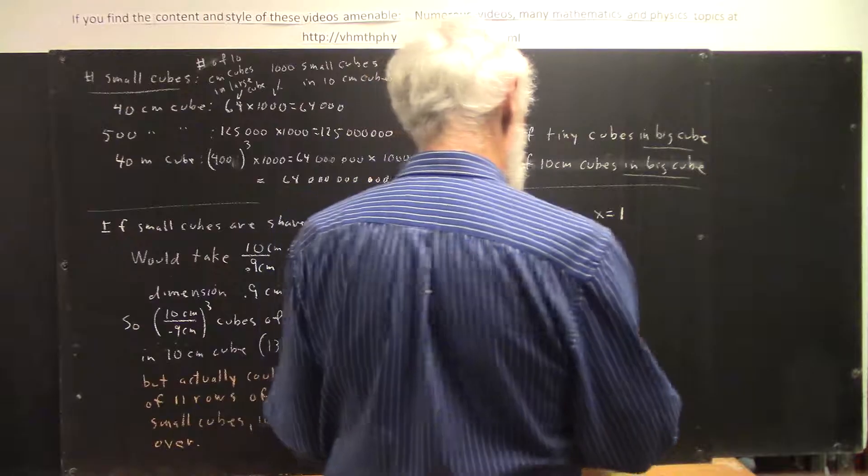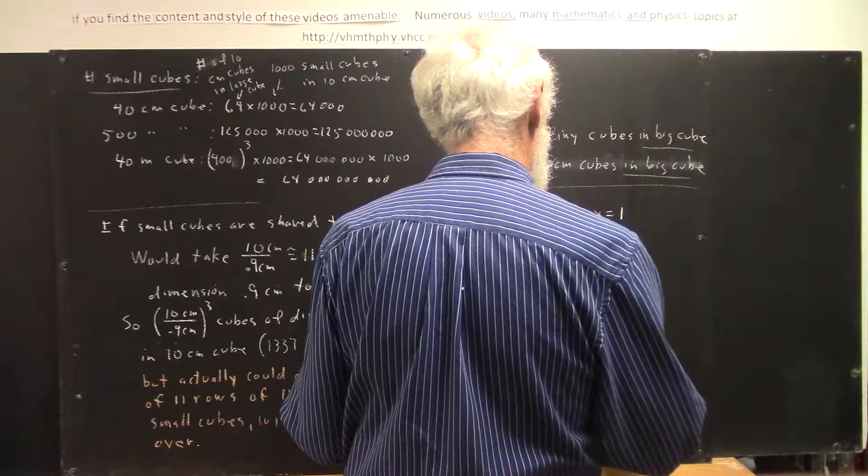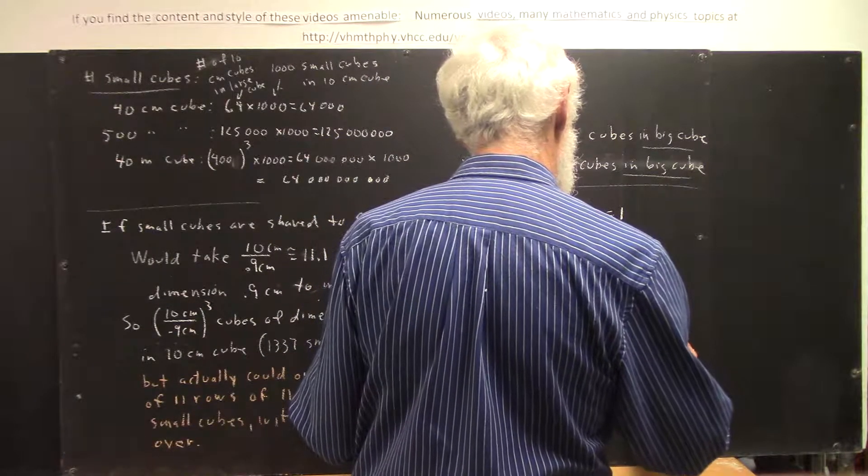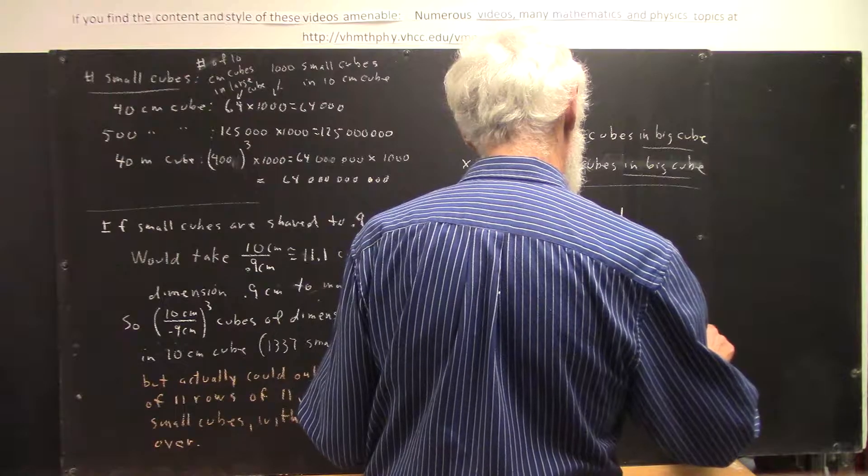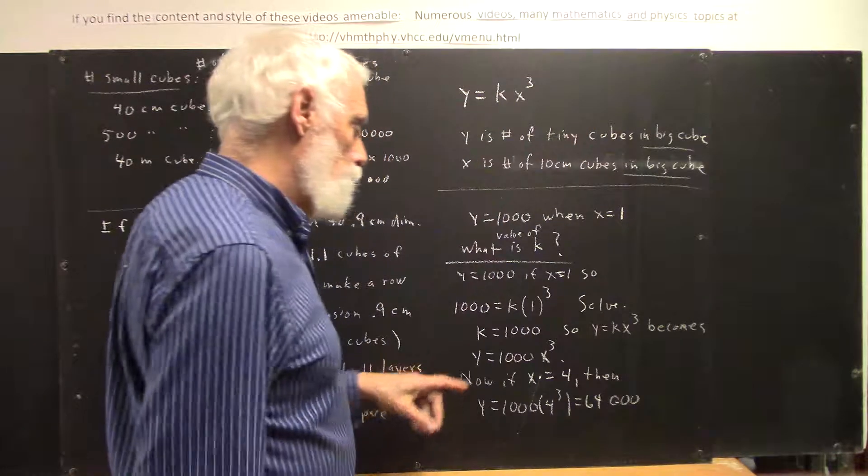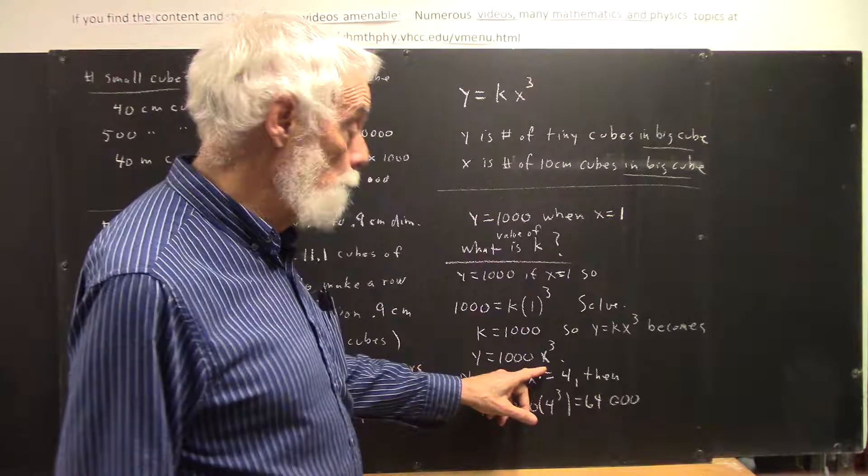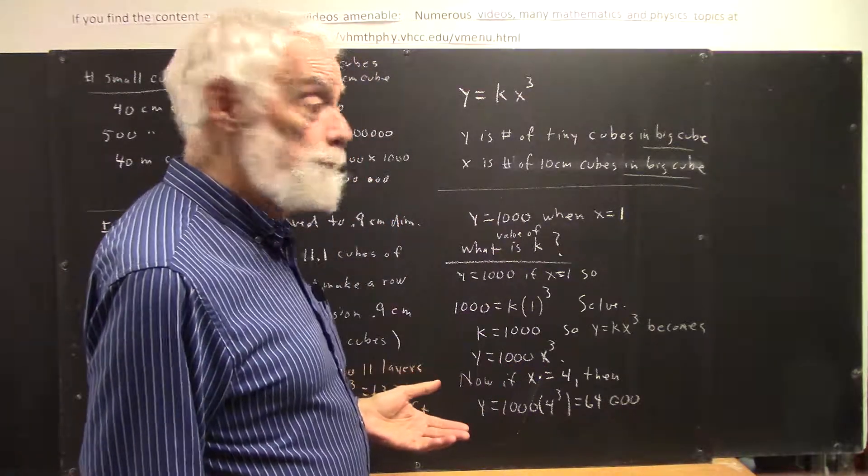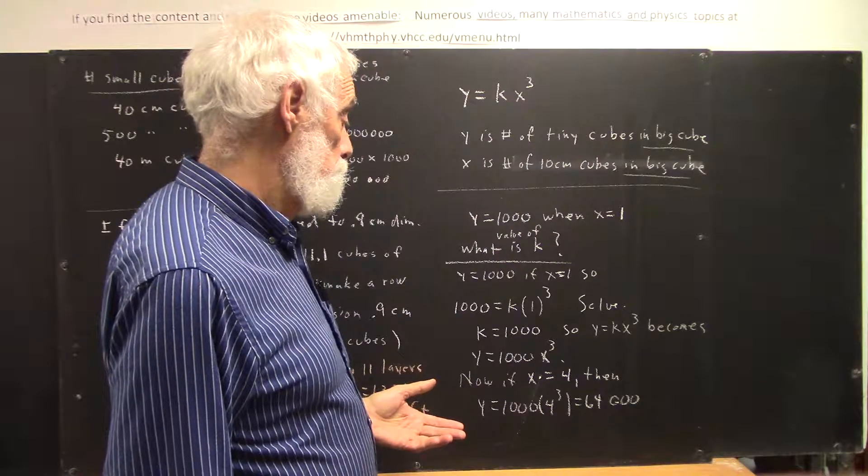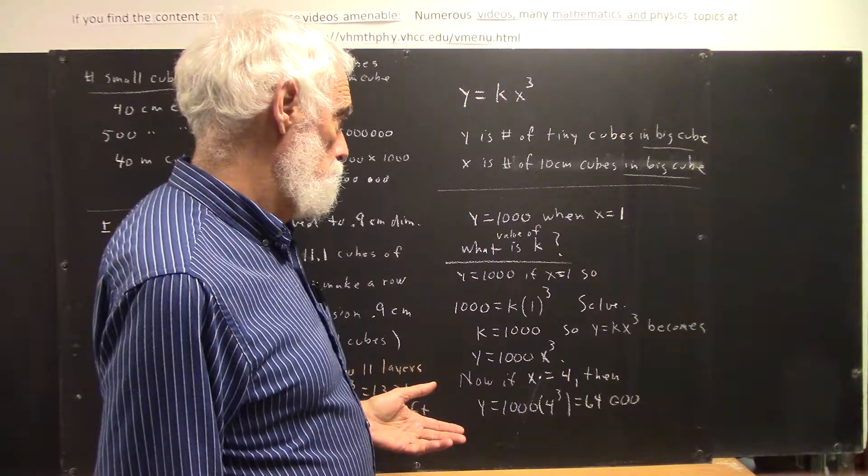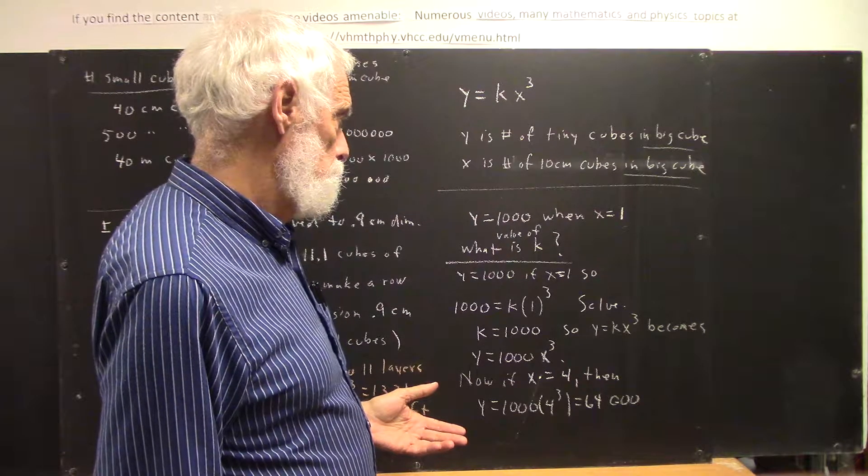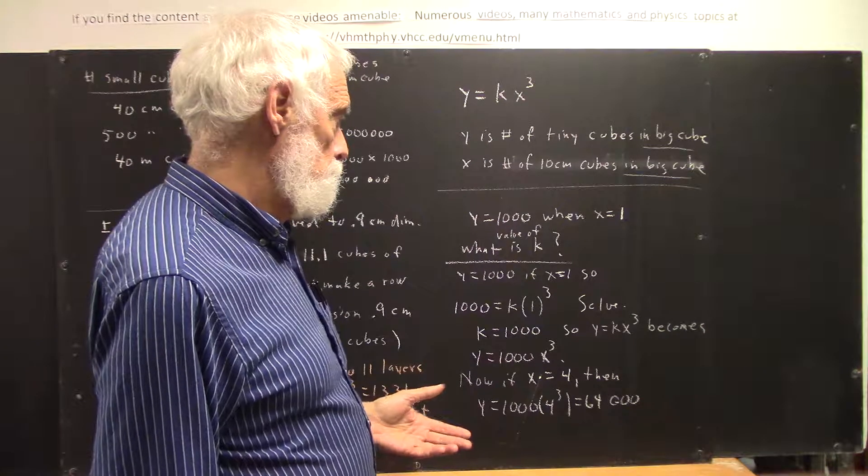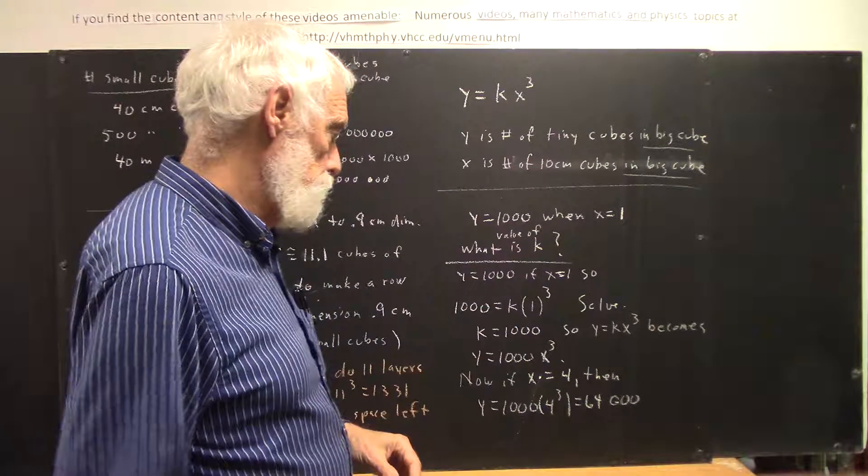So I'm going to say that y equals kx cubed becomes y equals 1,000x cubed, and now we have an equation that we can use to figure out... Well, I did something really boneheaded up here. I'll come back to it in a minute.